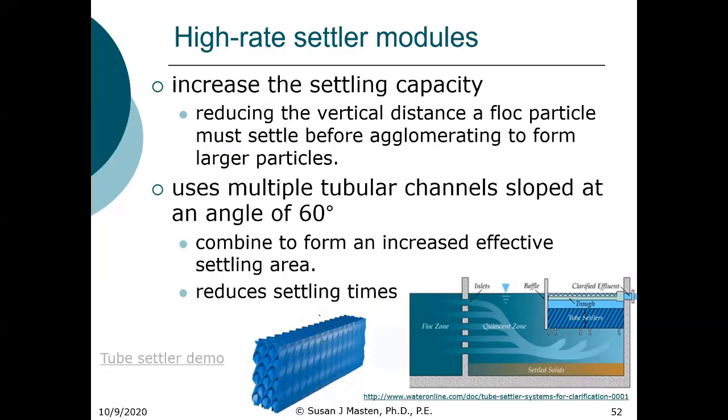So the way this works is the high rate settler, back to the high rate settler, is that a high rate settler looks like this. So it's multiple tubular channels sloped at an angle of 60 degrees. And that is used because you get increased settling. You get reduced settling times and it increases your area significantly. You can see it here. If this is the sedimentation basin here, and you add these tube settlers, you've increased the effective area by a very significant amount. I'm going to, I've got a video. It's just a short demo of a tube settler.